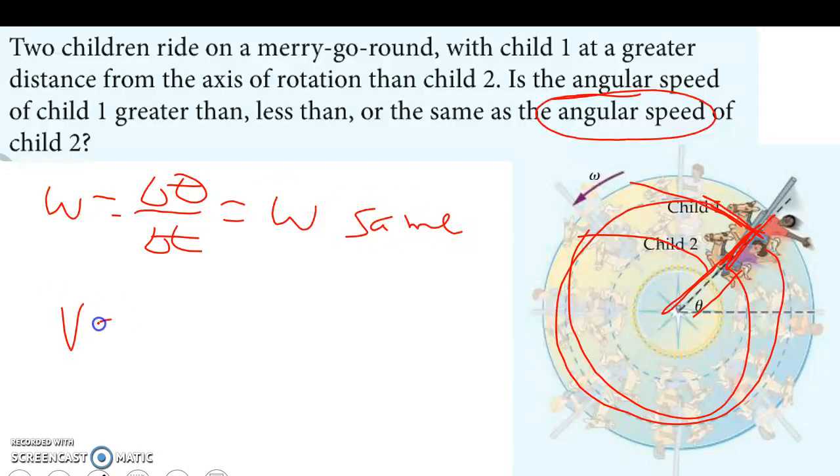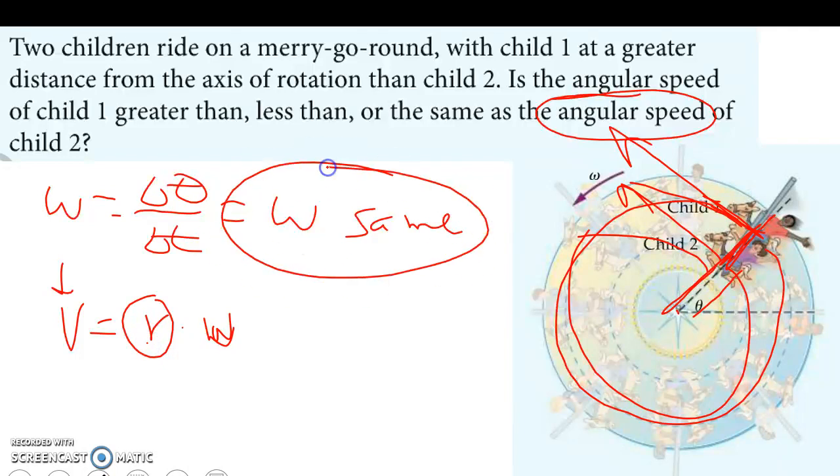Tangential velocity is based off of radius. If they both were to fly off, child 1 would fly off at a greater velocity than child 2, because child 1 is a greater radius away from the center. But angular speed, exactly the same.